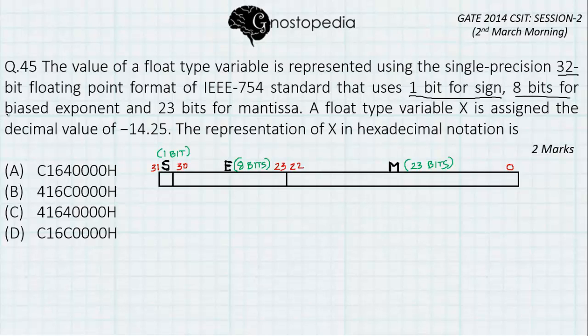8 bits for the biased exponent. We will see what is biased in a moment. As you can see, 8 bits are reserved here from bit 23 to 30, and last 23 bits for mantissa, which is from 0 to 22.